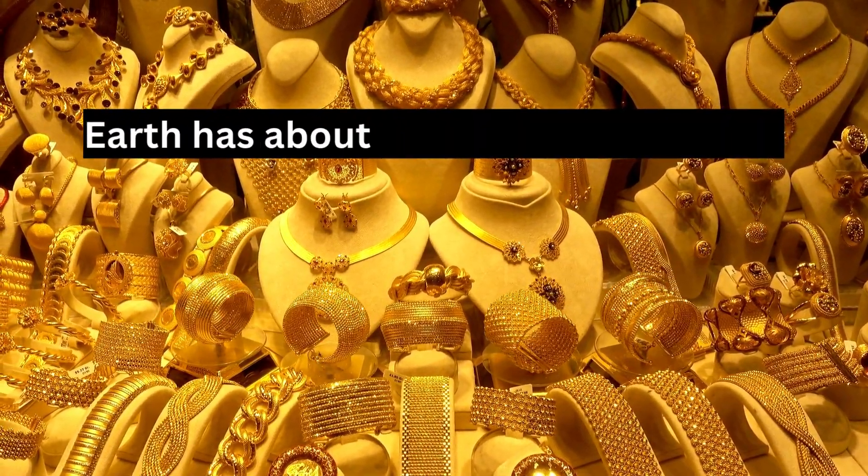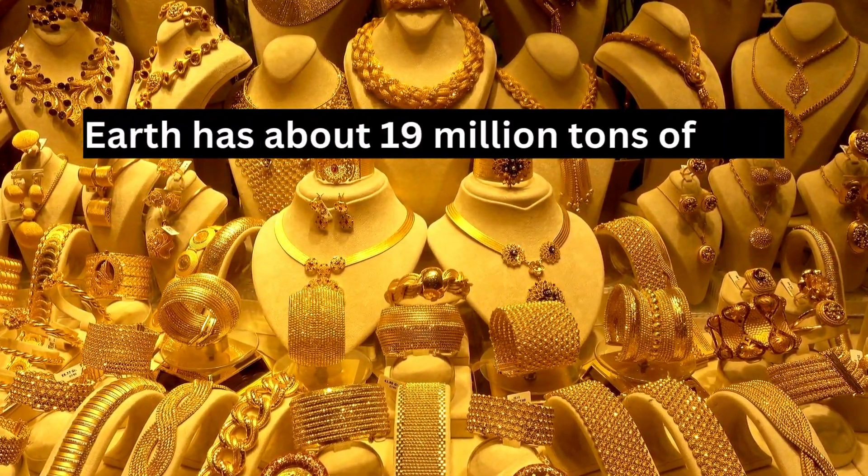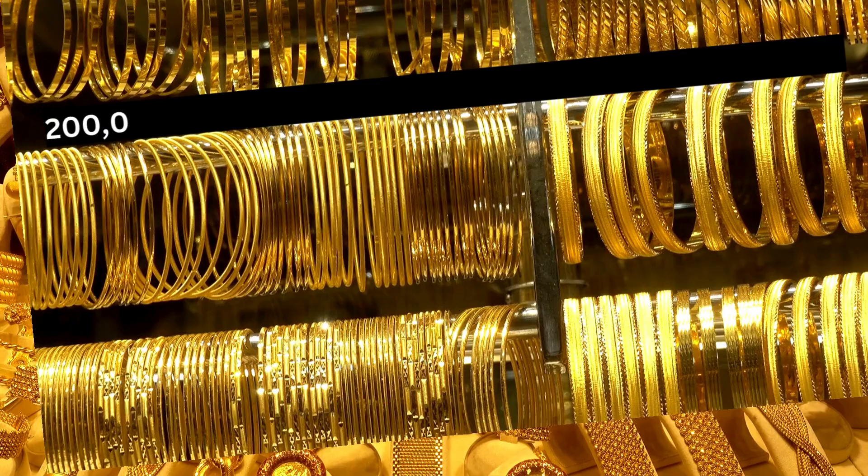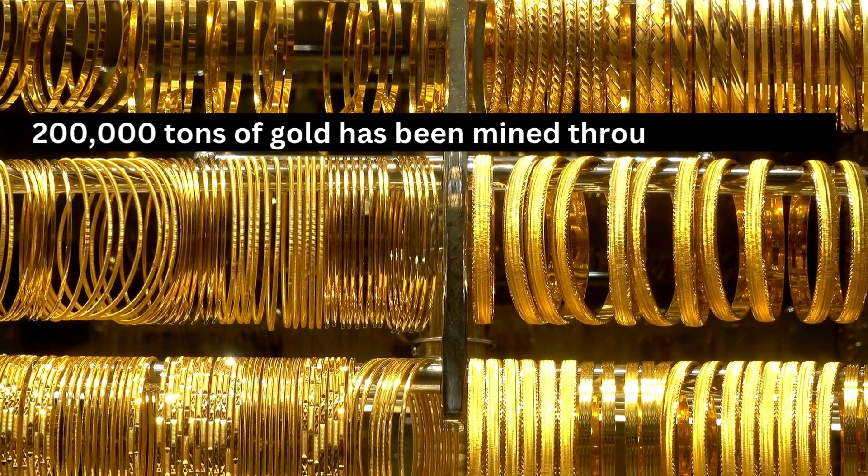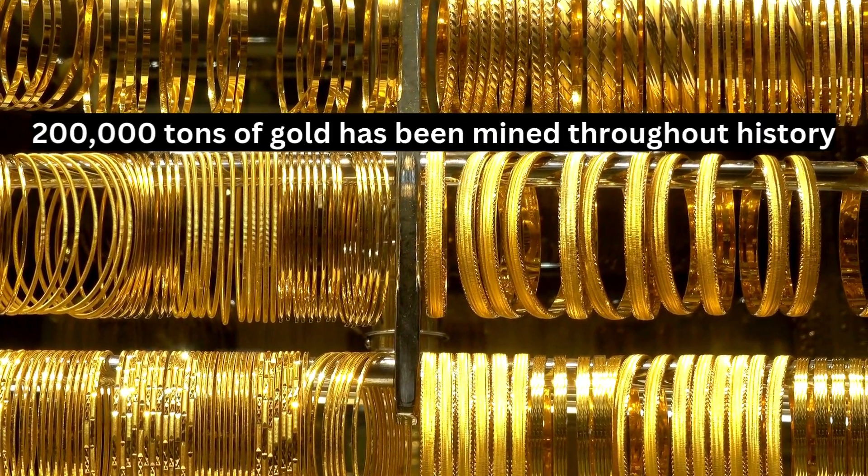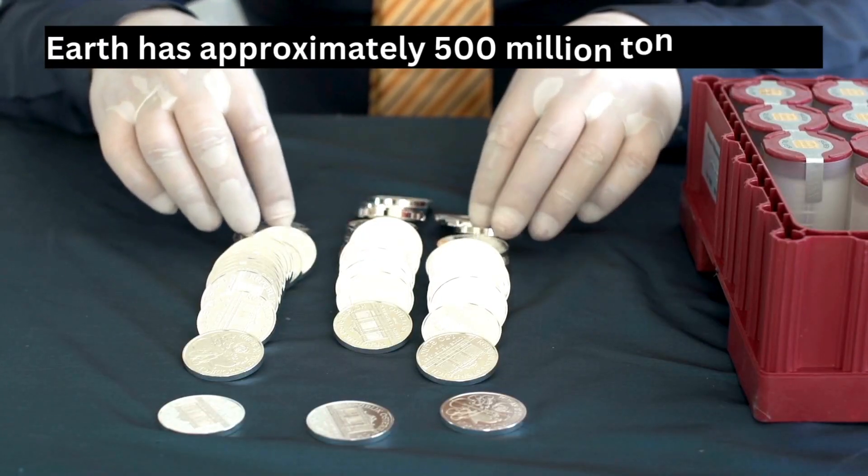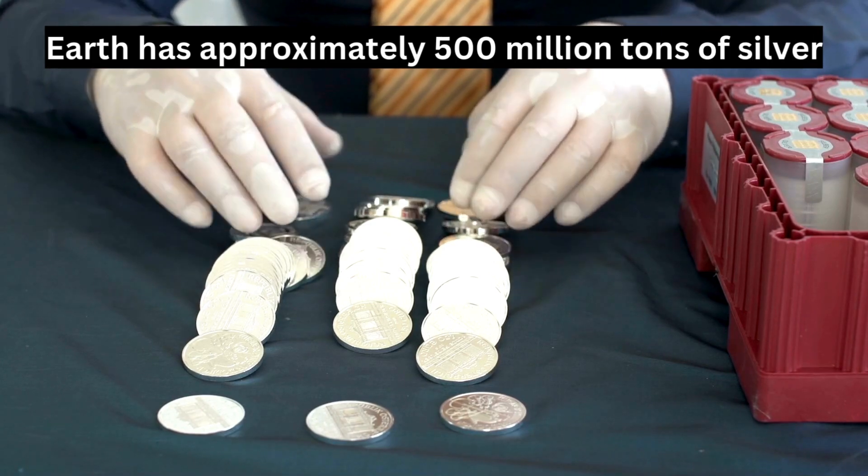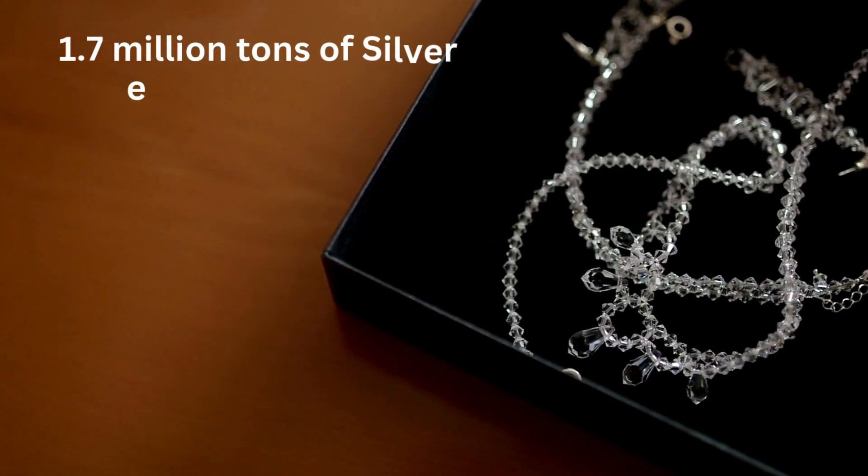In total, it's estimated that there are about 19 million tons of gold on Earth, but only about 200,000 tons have been mined throughout history. For silver, there are approximately 500 million tons of silver, with about 1.7 million tons extracted so far.